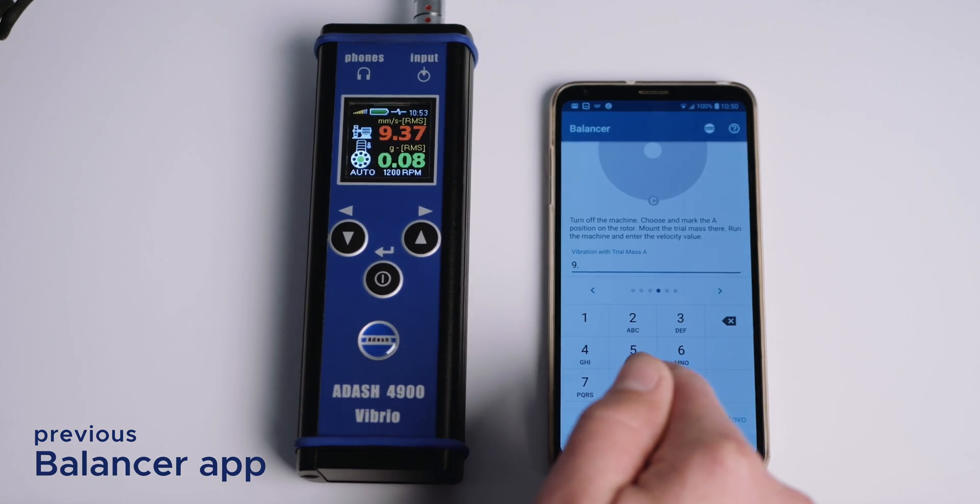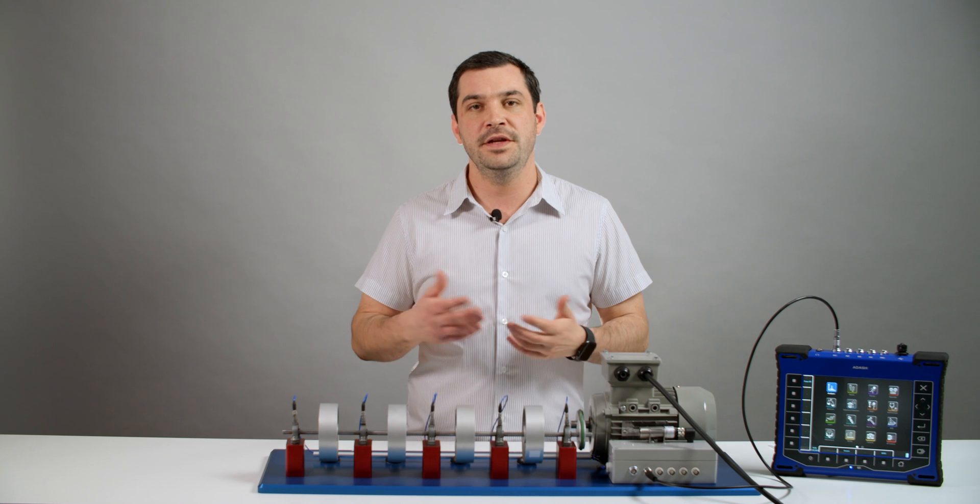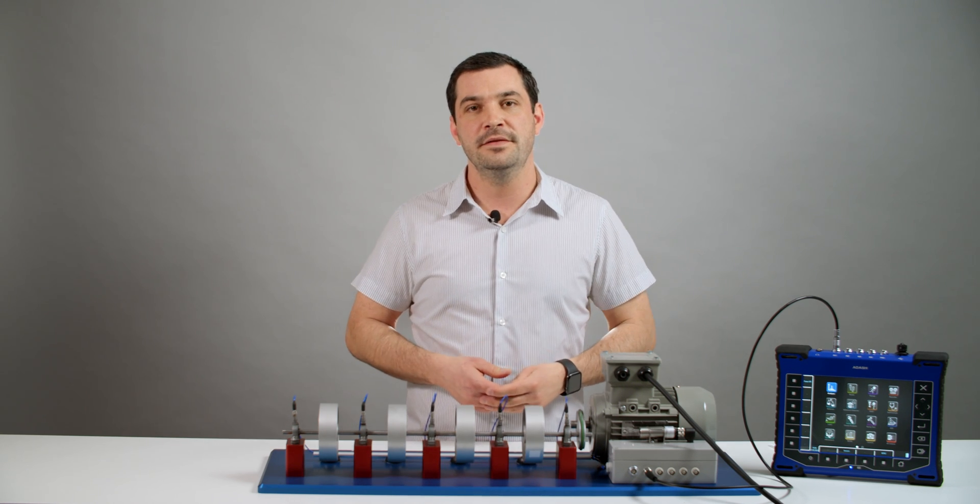Previous app used three angles balancing procedure and you needed some vibration meter too. Click on the link to see the whole video about balancing with older app and vibration meter. This method has not changed, but here we are with a second and major improvement of the balancer app.